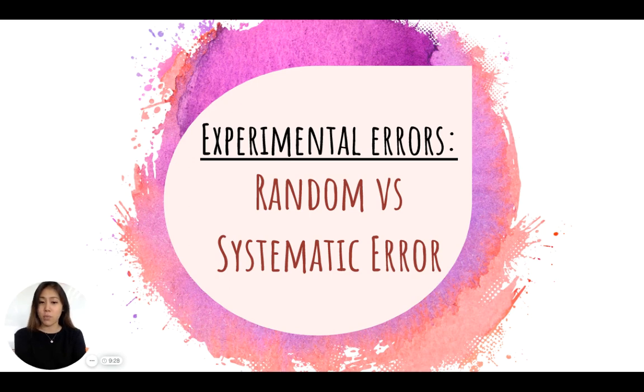Uncertainties are technically a form of error because we're not certain about the value that we took when we were measuring specific ingredients. So uncertainties could give us an indication of random versus systematic error.